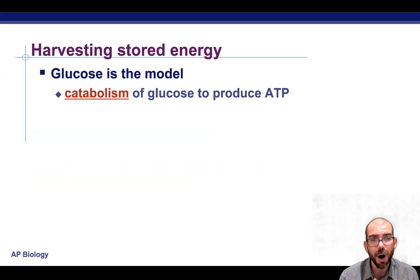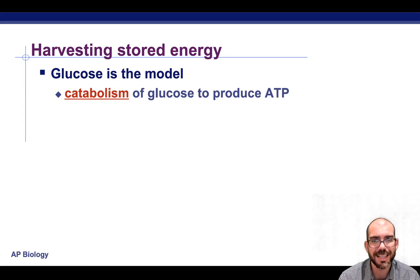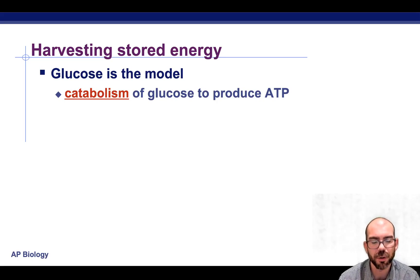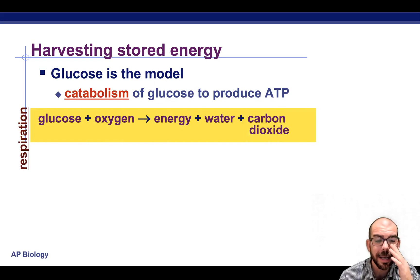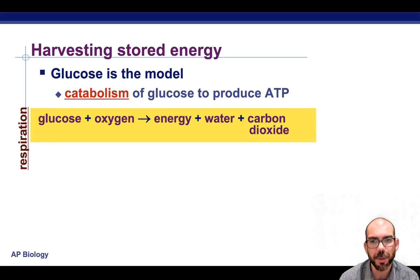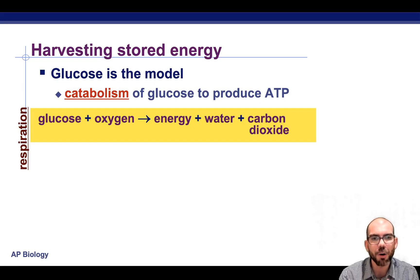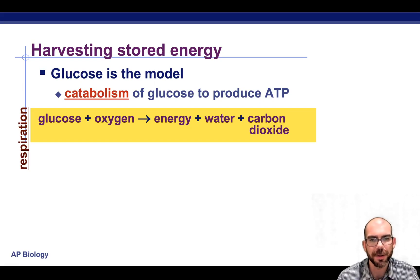Glucose is going to be the model that we're going to analyze when looking at how living things are able to produce ATP. And this is a catabolism of the glucose molecule, meaning we're going to be breaking that molecule down. Here is the overall chemical reaction for cellular respiration. Glucose and oxygen in. Out comes ATP energy, water, and carbon dioxide.